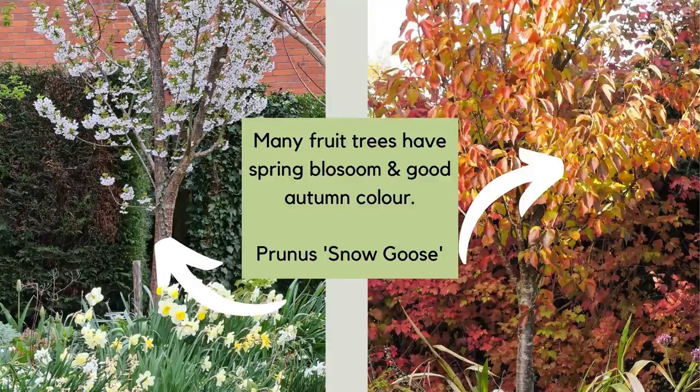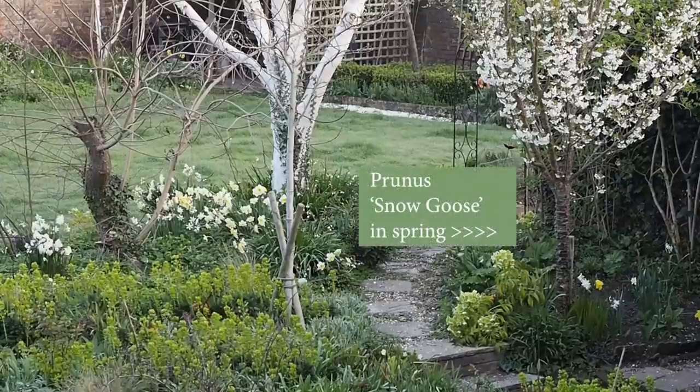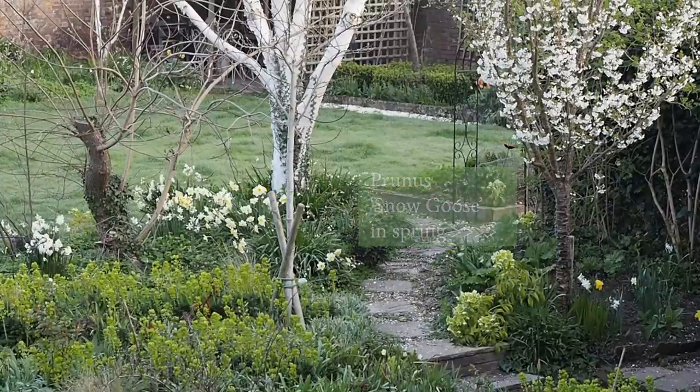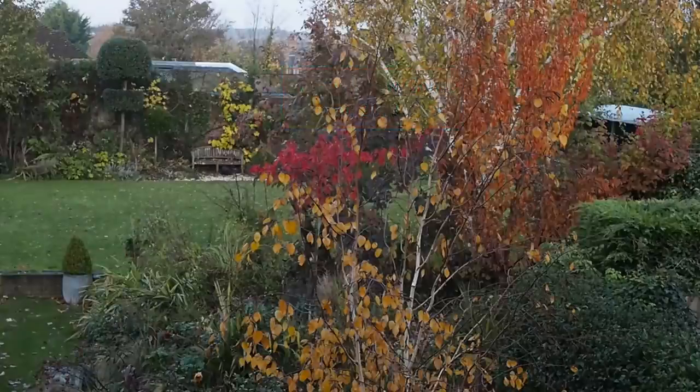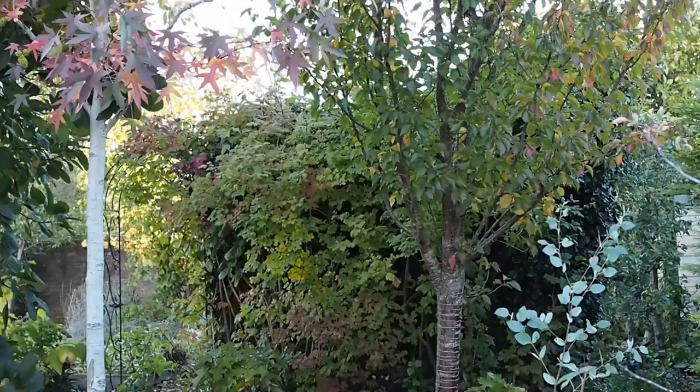When looking for autumn colour, think about getting a plant with two seasons of interest. Fruit trees are wonderful for this — they usually have blossom in spring, fruit in autumn, and many have excellent leaf colour too. Some fruit trees are ornamental, like this one here — an ornamental plum called Snow Goose. Although it doesn't fruit, I really value it because it has beautiful white flowers in spring, and in autumn it usually goes a rich rusty red-orange. It has a lovely vase shape, so it doesn't cast much shade, making it a very good tree for smaller gardens.